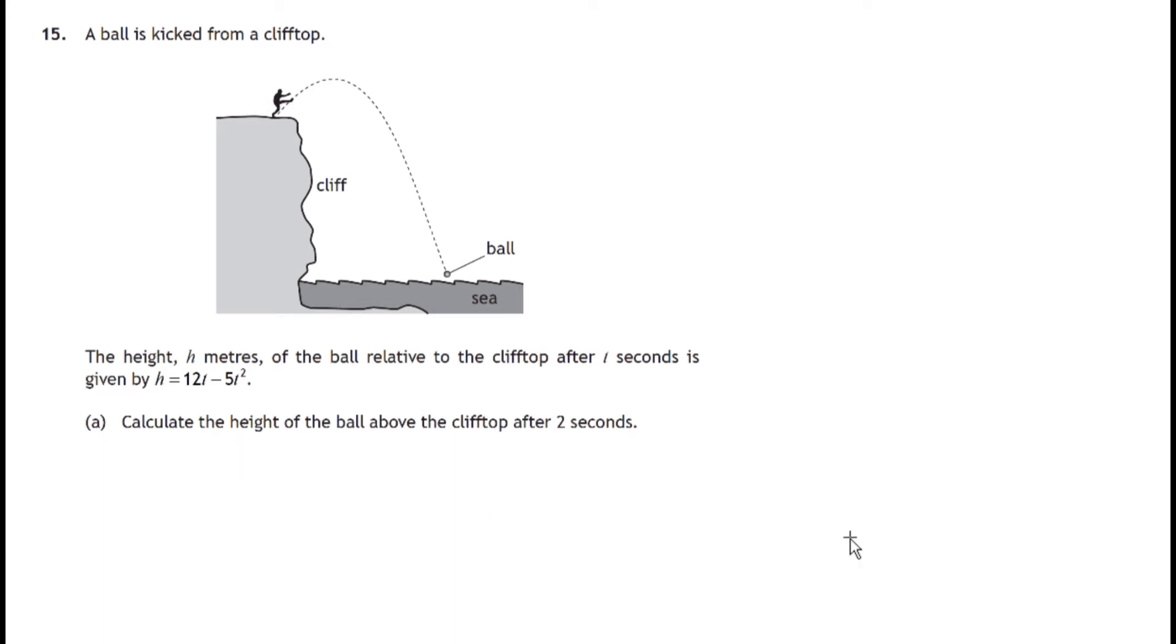In part (a) we're asked to calculate the height of the ball above the cliff top after two seconds. So let's start that. We'll say therefore when t equals 2, that would be two seconds after the ball is kicked. The height will be 12 times t, that's 12 times 2, minus 5 times t squared, that's 2 squared.